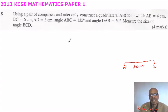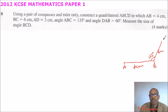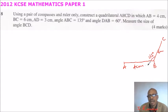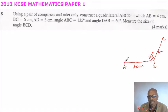BC is 6 cm, and we draw a line here. We have been given that angle ABC is 135 degrees. So this is 6 cm and this angle here is 135 degrees — that is where we have our C. From there, we are told AD is 3 cm, and angle DAB is 60 degrees. So we measure an angle of 60 degrees there, and this side is 3 cm.